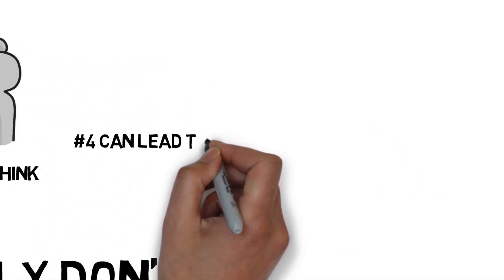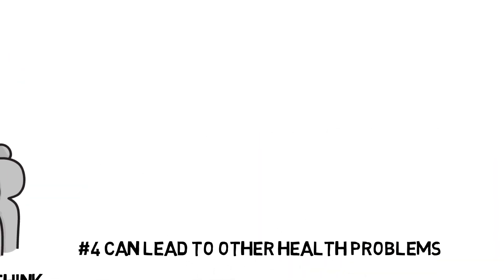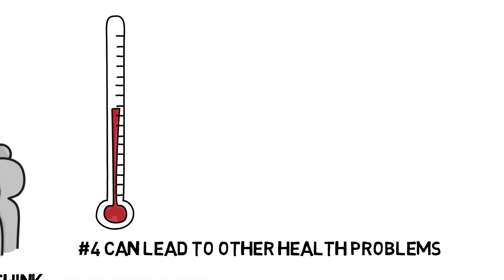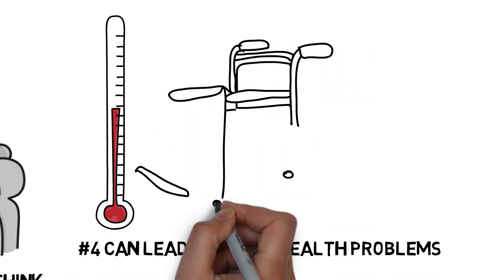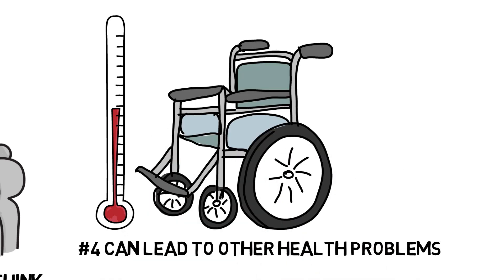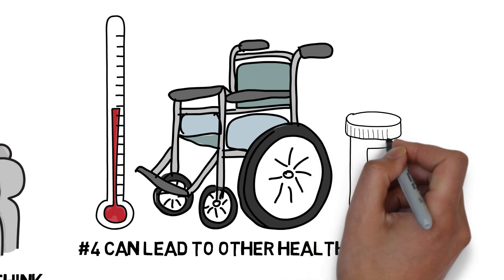Number 4. Left untreated, celiac disease can lead to other health problems. And as we learned earlier, the only treatment for celiac disease is a 100% gluten-free diet, which means that most problems occur when a person hasn't been diagnosed. Without an early diagnosis, the chances of developing cancer, diabetes, osteoporosis, or even infertility raise dramatically.